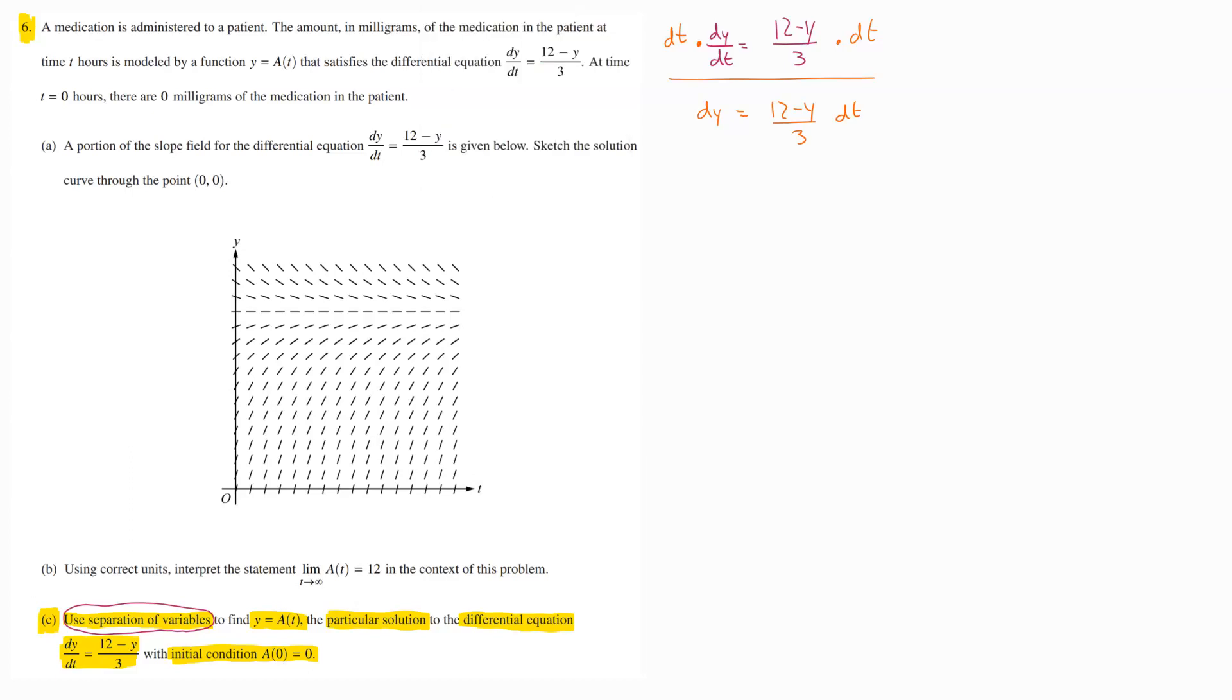And now we need to get that y piece over to the other side. So to move that over, to cancel it out on this side, I would multiply by 1/(12 - y). And then whatever I do to the other side, I got to do on both sides. So then from there, I end up with 1/(12 - y) dy equals. That would cancel out. That's going to leave us with a 1/3 dt on this side.